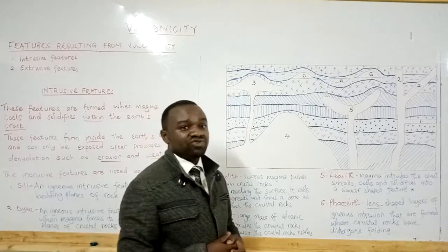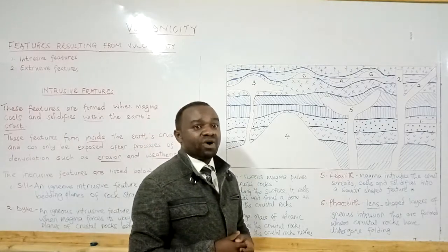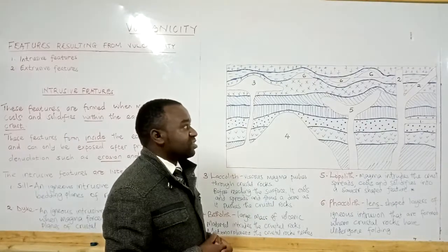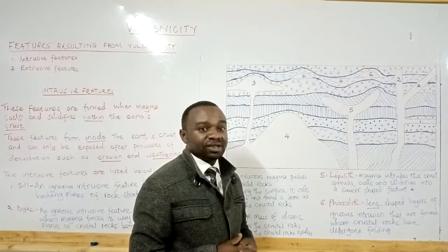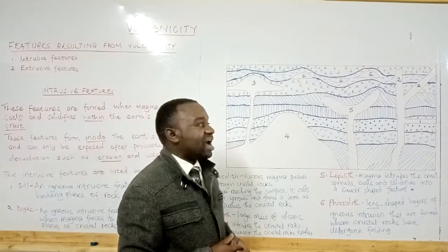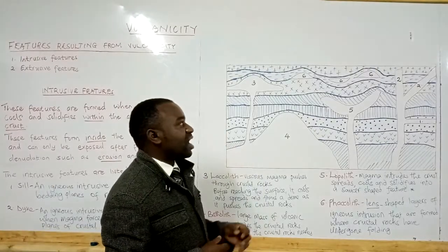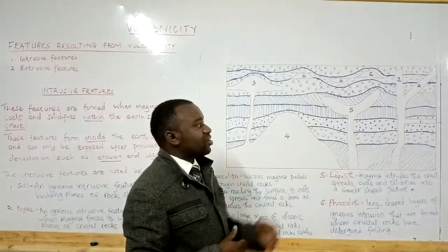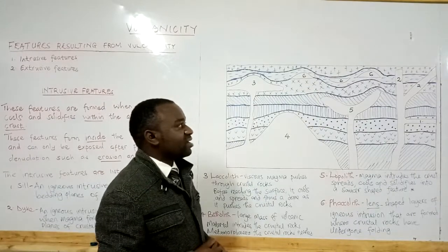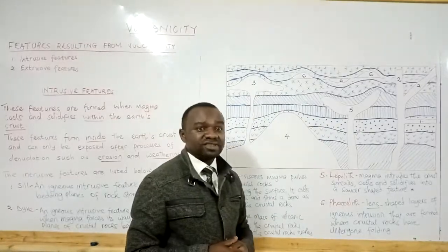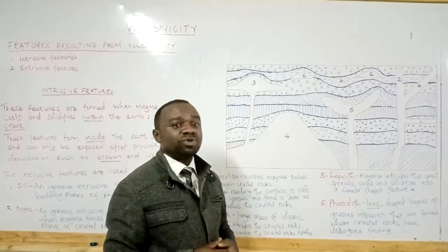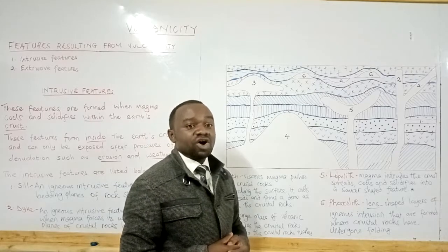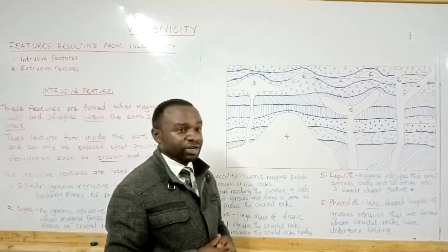The last feature is what we call a phacolith. Phacoliths are usually formed in series — they don't occur as one but in a series. Phacoliths are igneous intrusive features that are formed where crustal rocks have undergone folding.